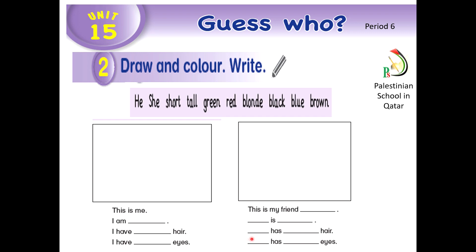Now, continue. She or he has brown, black, or brown hair. Then, she or he has black, blue, and green eyes.